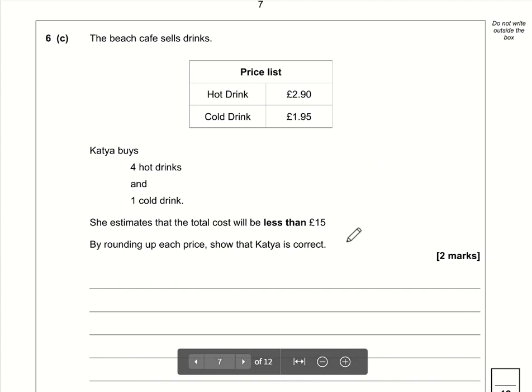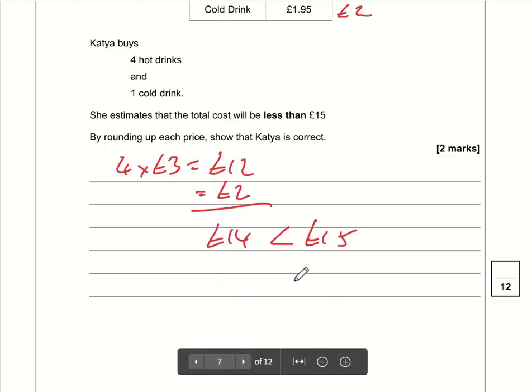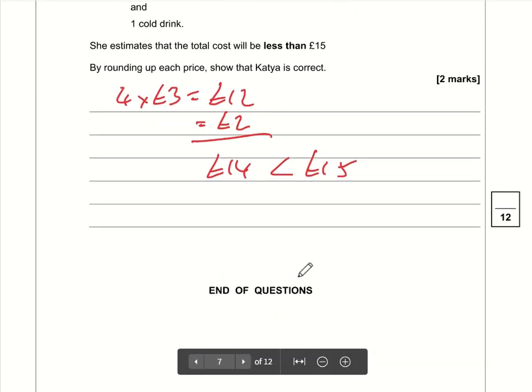Question 6c: We need to estimate. I'll round hot drinks to £3 and cold drinks to £2. Four hot drinks: 4 times £3 equals £12, plus one cold drink at £2. That's £14 total, which is less than £15, so Katya is correct. That's the end of this paper.